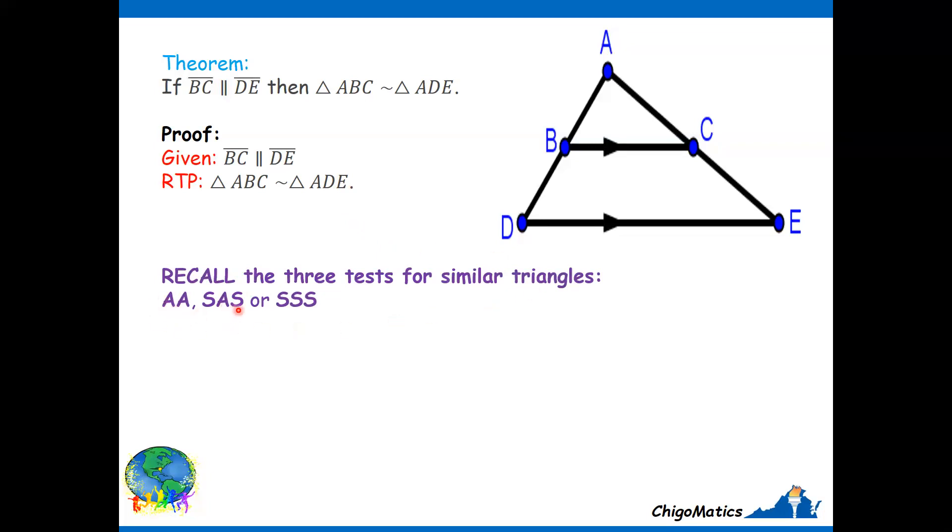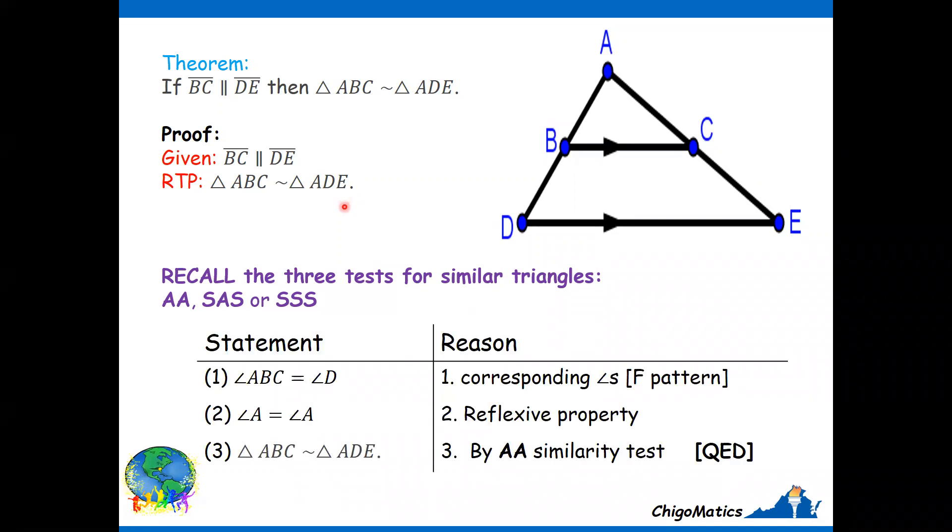We are supposed to choose the one that will suit the situation, and the choice is informed by the given information. The fact that you are given two segments parallel, the one that is obvious is to look for two angles that are equal and then conclude that the two triangles are similar. The proof is very quick.